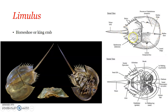This is the external dorsal structure — dorsally, this is how Limulus is visible. Ventrally you can see all the ventral appendages and segmentation. Dorsally, the cephalothorax in Limulus is convex and horseshoe-shaped, which is why it is known as the horseshoe crab.